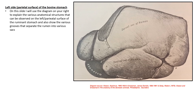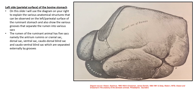On this slide, I will use the diagram on your right to explain the various anatomical structures that can be observed on the left or parietal surface of the ruminant stomach, and also show the various grooves that appear to separate the rumen into various sacs from the outside. This diagram is sourced from Sisson and Grossman's 'The Anatomy of the Domestic Animals.' The rumen has five sacs: the atrium ruminis (or cranial sac), the dorsal sac, the ventral sac, the caudodorsal blind sac, and the caudoventral blind sac. These appear to be separated externally by various grooves, which we will look at shortly.